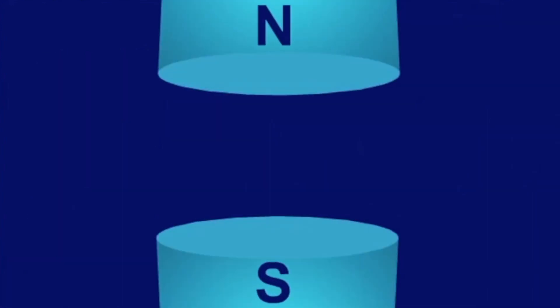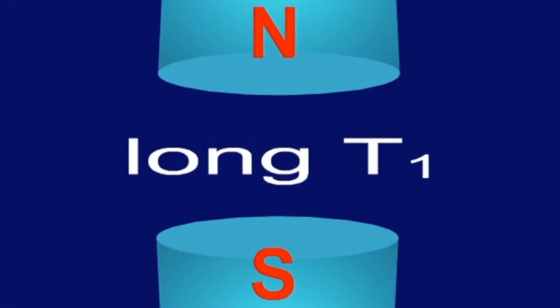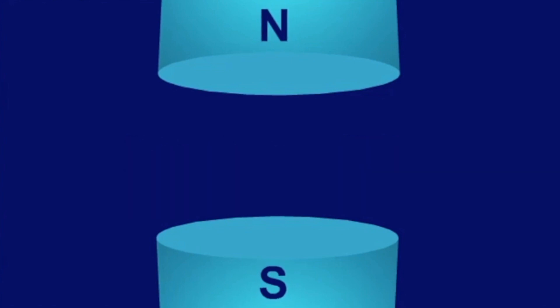And why is T1 longer in stronger magnetic fields? As we heard at the beginning, the precession frequency depends on magnetic field strength, a relationship described by the Larmor equation.